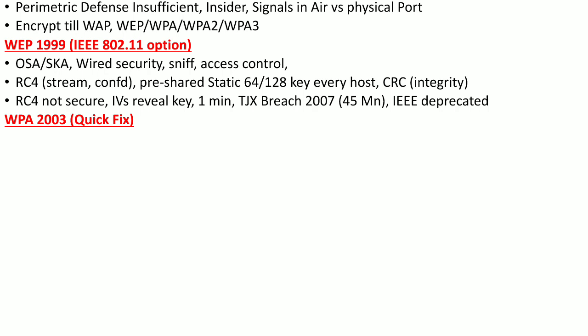The Wi-Fi Alliance introduced WPA — Wireless Protected Access — in 2003 as a quick fix to the vulnerabilities found in WEP. Devices using WEP had their firmware upgraded to WPA, specifically the firmware of the wireless network interface card. However, very few devices were actually able to upgrade their firmware due to the resource requirements of the WPA protocol.